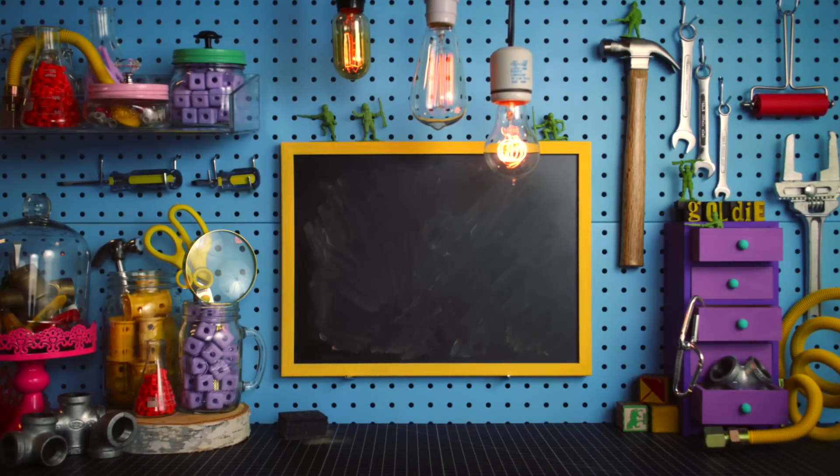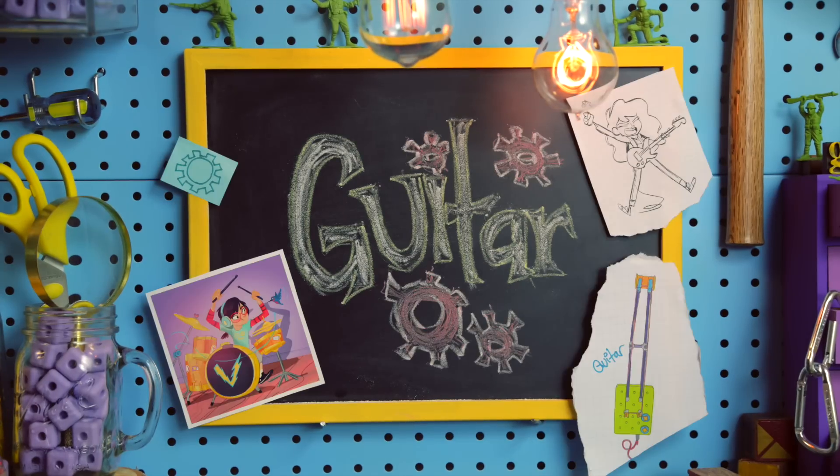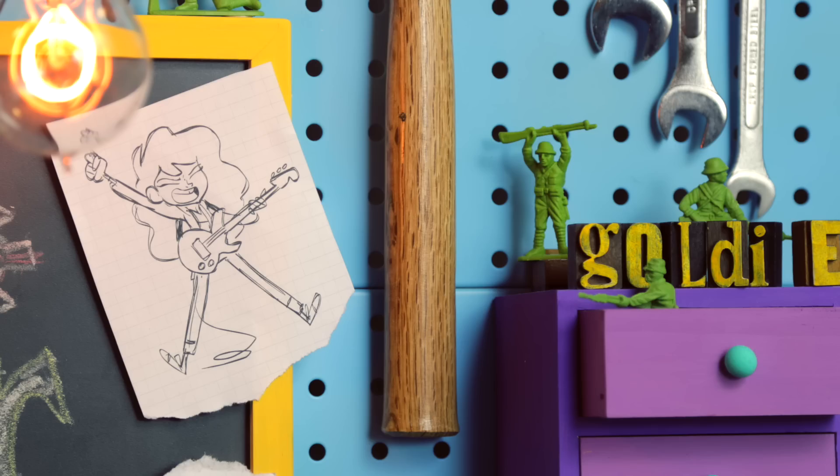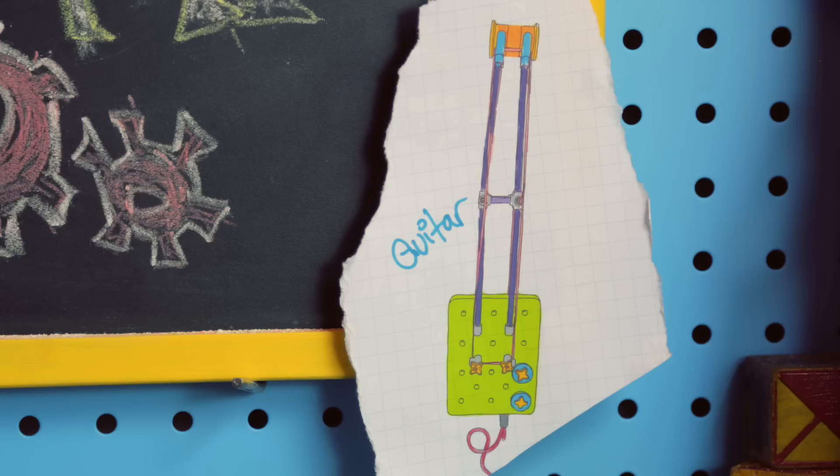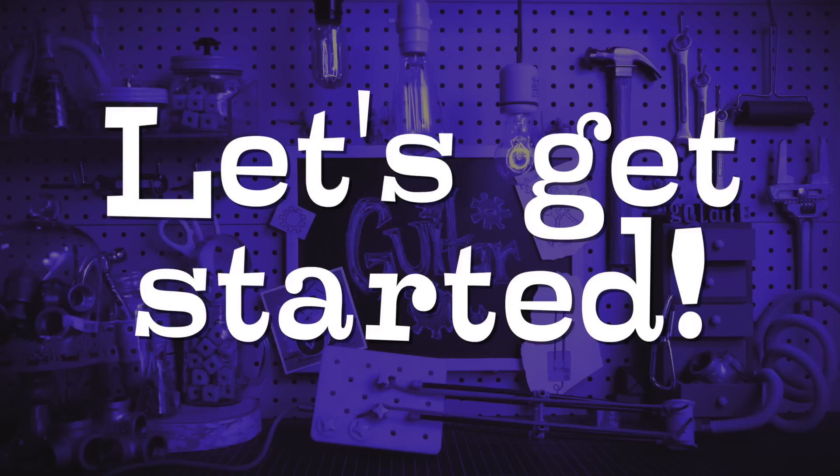Welcome to the block shop. Today we're going to build a guitar. Goldie and the gear heads are meeting for practice in an hour, but Goldie's guitar is still in the shop. Time to improvise, let's get started.